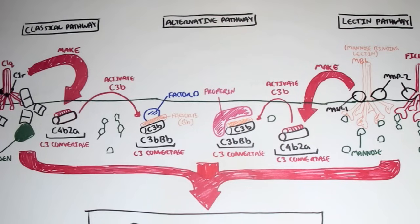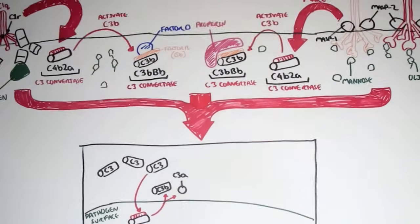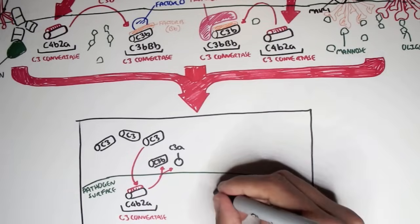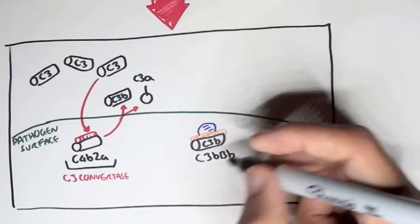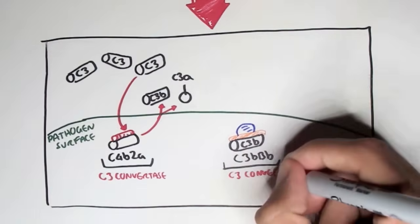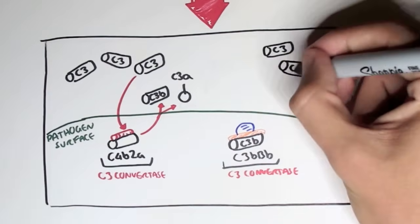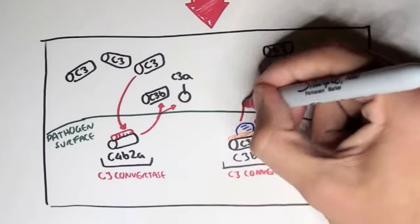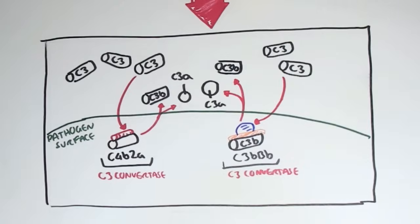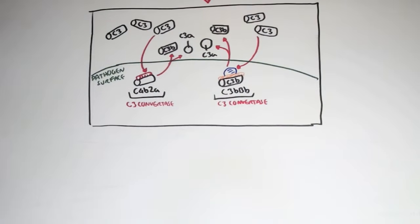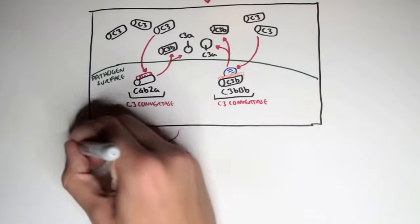So the alternative pathway essentially enhances the classical and lectin pathways, and vice versa. All three pathways — the classical, alternative, and lectin — form a C3 convertase, and what a C3 convertase does is activate C3, splitting it into C3A and C3B. This is the main thing to take in.